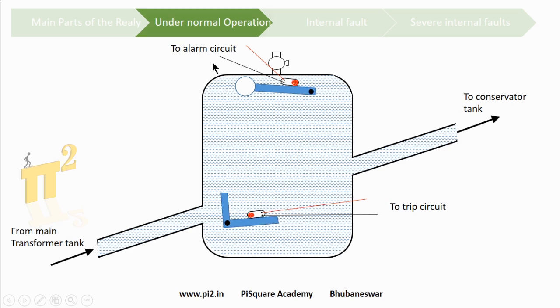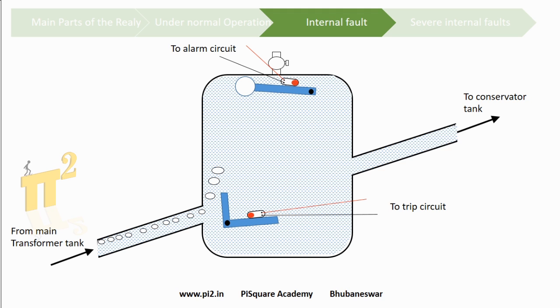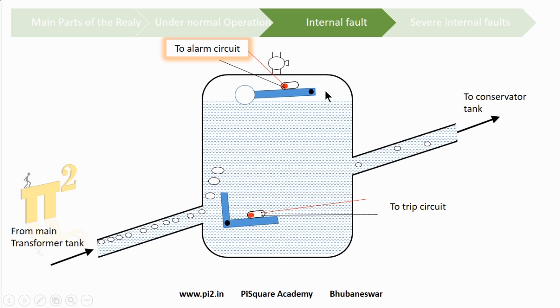Now, if there is a fault, gases are generated in the transformer. As we know, gases are less dense compared to oil, so they try to escape. During this process, some gases get trapped here, which tilts the float down. Hence, the mercury switch is now activated and triggers the alarm circuit.